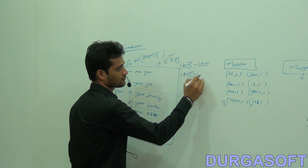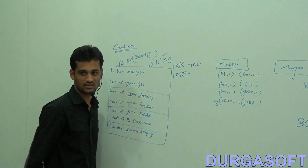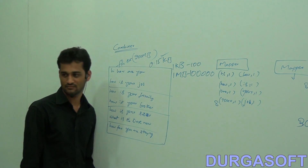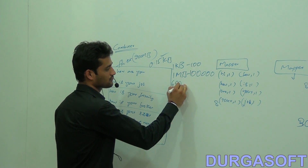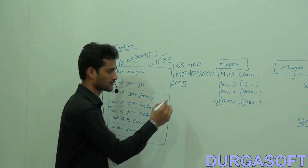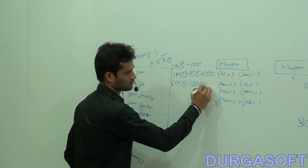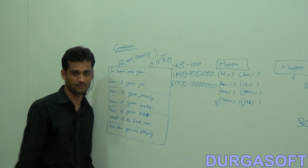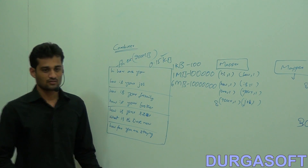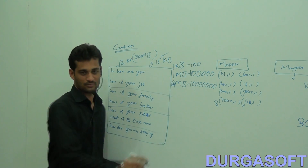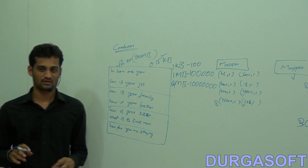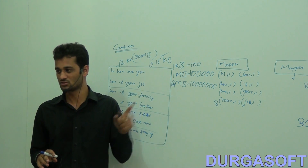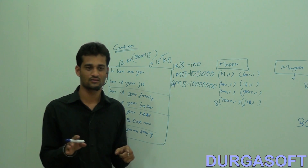If it is 1 KB, consider it gives about 100 key-value pairs. If it is 1 MB, consider it gives about 1 lakh key-value pairs. If it is 64 MB, just consider it gives about 1 crore key-value pairs.